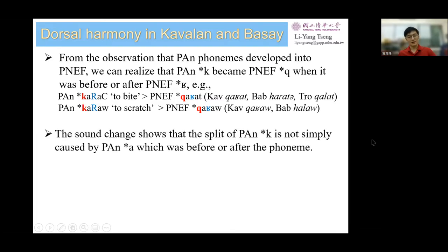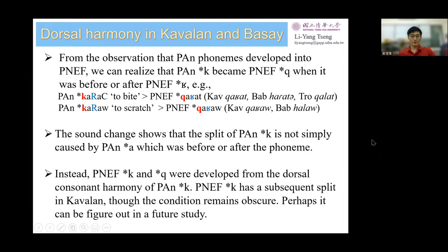This implies that the split of Proto-K is not simply caused by R in Proto-Austronesian. Instead, Proto-Northern East Formosan K and Q were developed from the dorsal consonant harmony of Proto-Austronesian K, and then PNEF-K itself has a subsequent split in Kabbalan, though the condition remains obscure and perhaps can be figured out in future study.